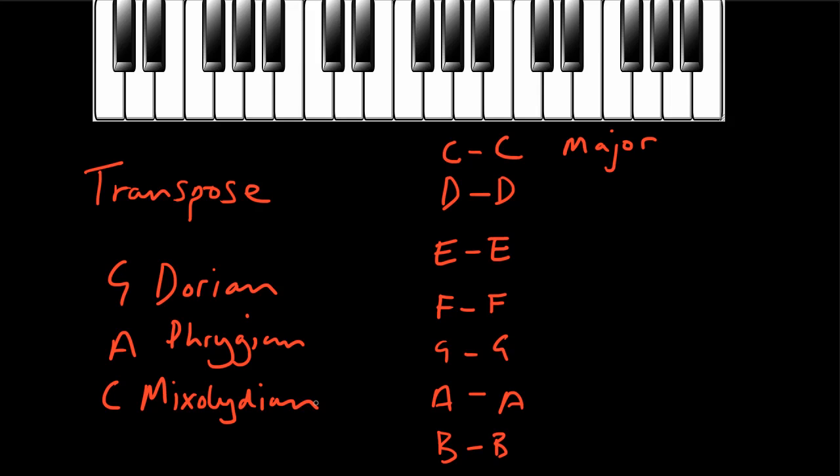But if you know the major scales, I'm promising you that with a little bit of practice, you can find any of the modes on any note you like really easily. Another way we could talk about building all of these different modes is to say that essentially what we're doing is playing a C major scale but starting that scale on a different note each time. So the Dorian mode is a bit like playing a C major scale but instead of starting on C, we start on D.